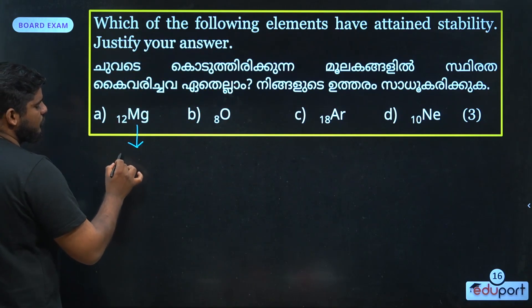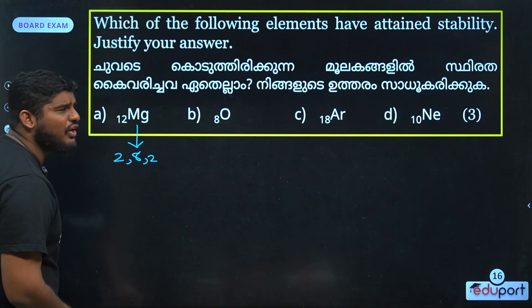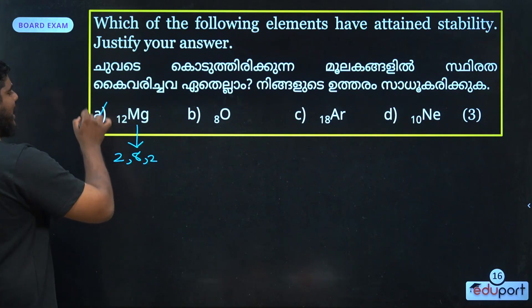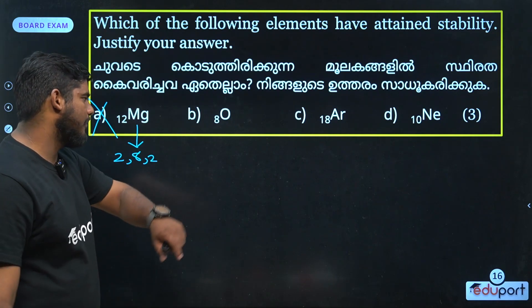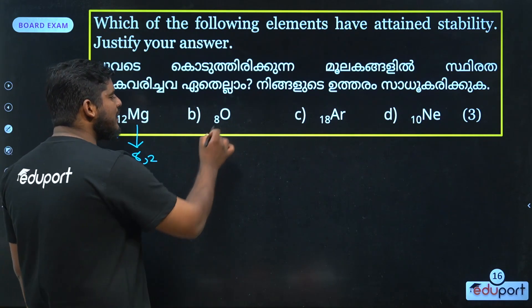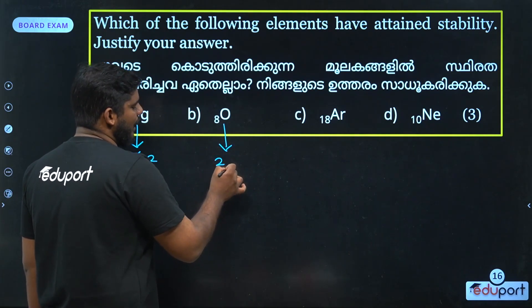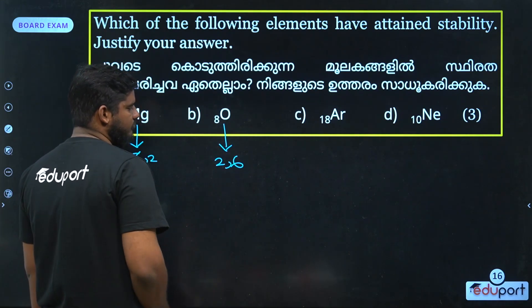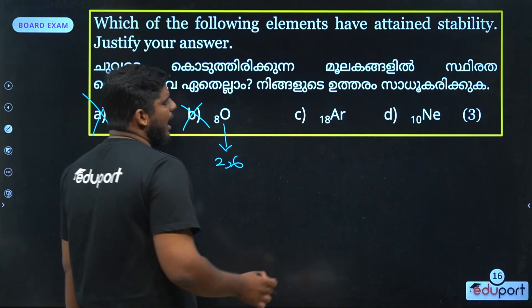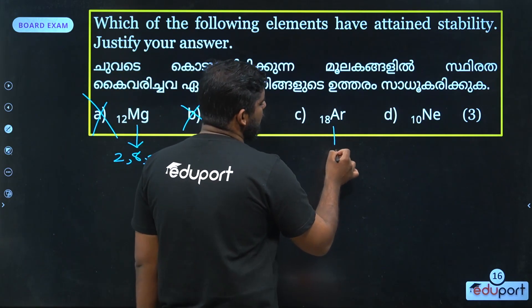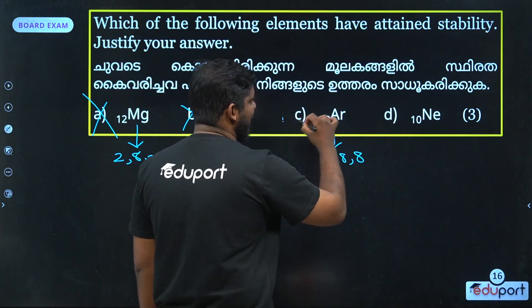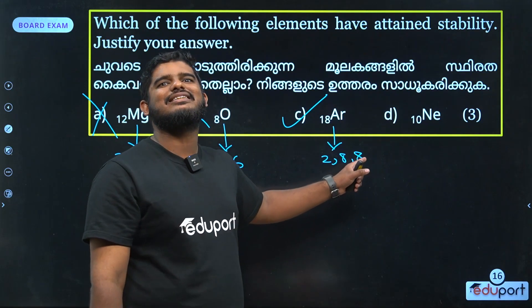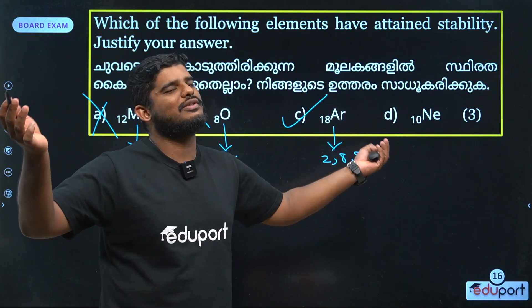Magnesium is 15 — so 2, 8, 2. Because it has electron energy. Oxygen is not stable — 2, 6. If you have a full electron energy, you get 2, 8, 8.